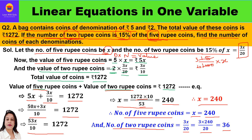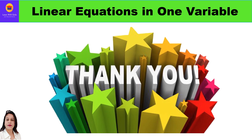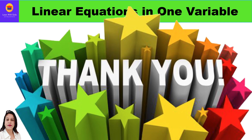You can check this by multiplying 5 times 240 to get the value of 5-rupee coins, and 2 times 36 to get the value of 2-rupee coins, then verify whether the total comes to 1272. This is the homework for you all — write the answer in the comment section. Hope you have understood both questions related to coins and money. In case of any doubt, ask in the comment section. Thank you everyone, have a great day ahead.